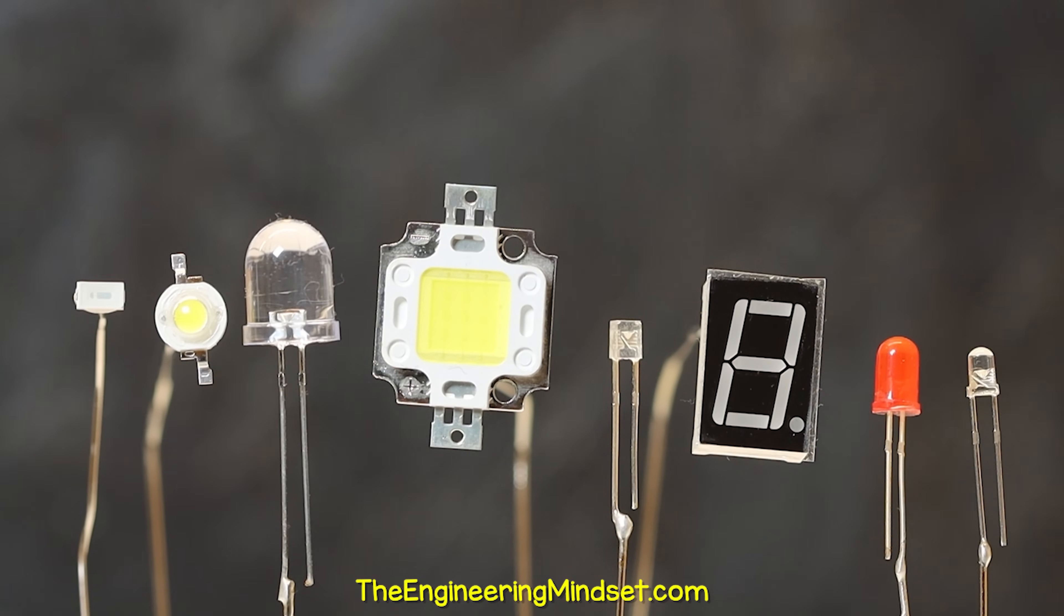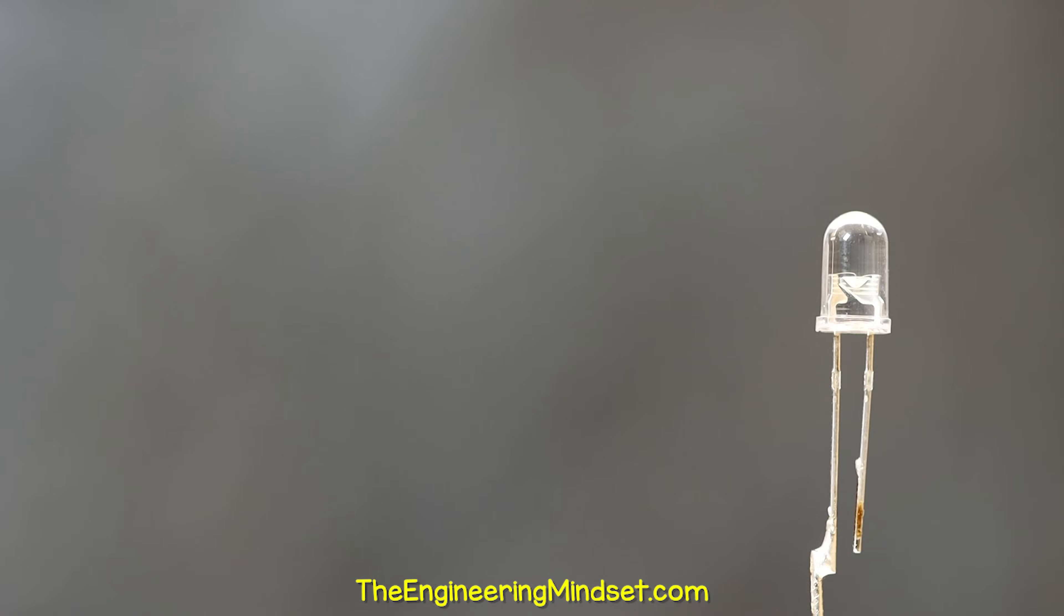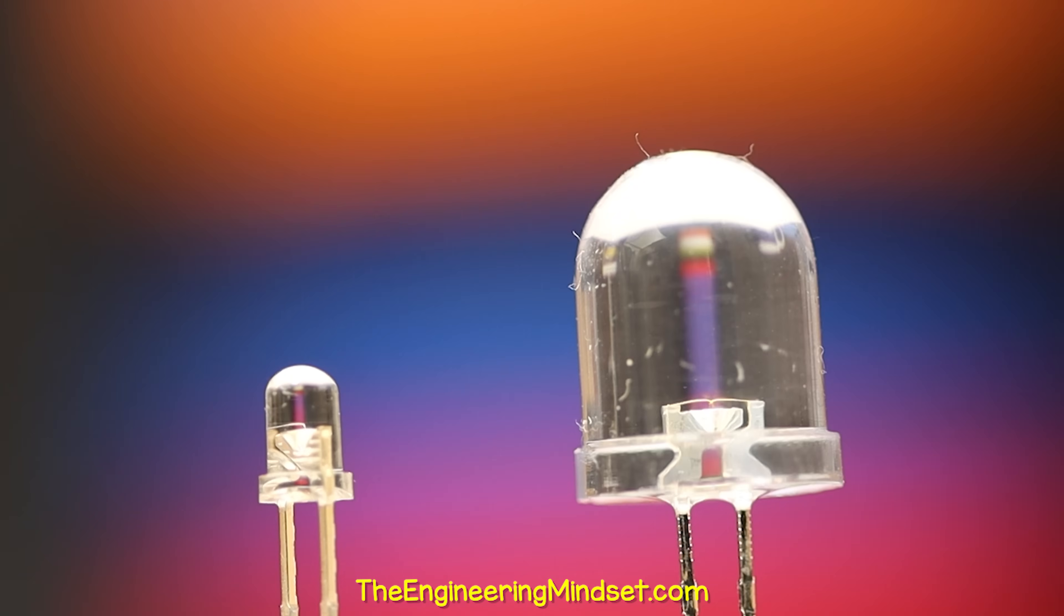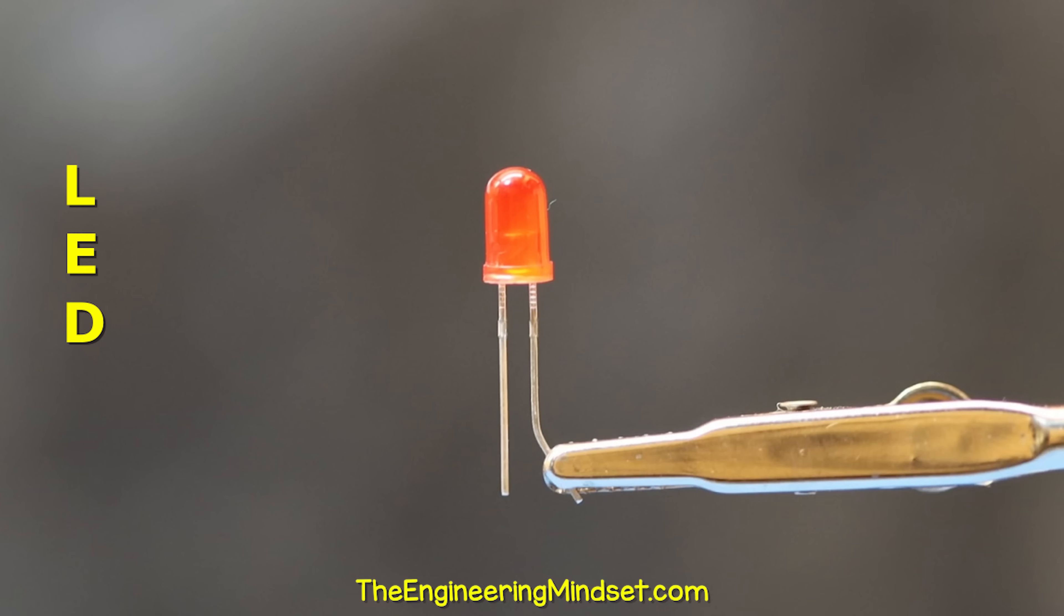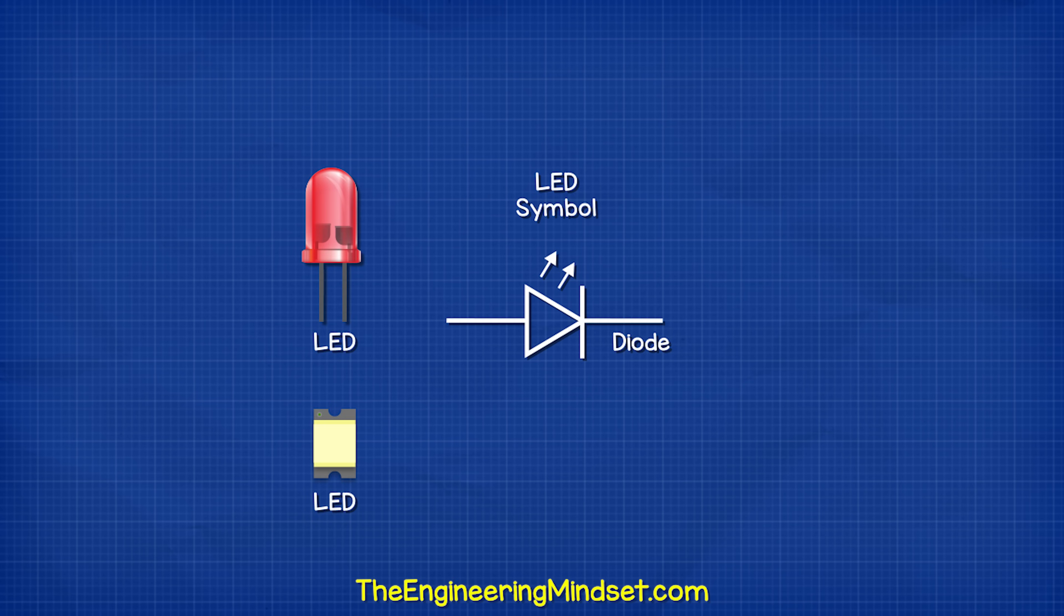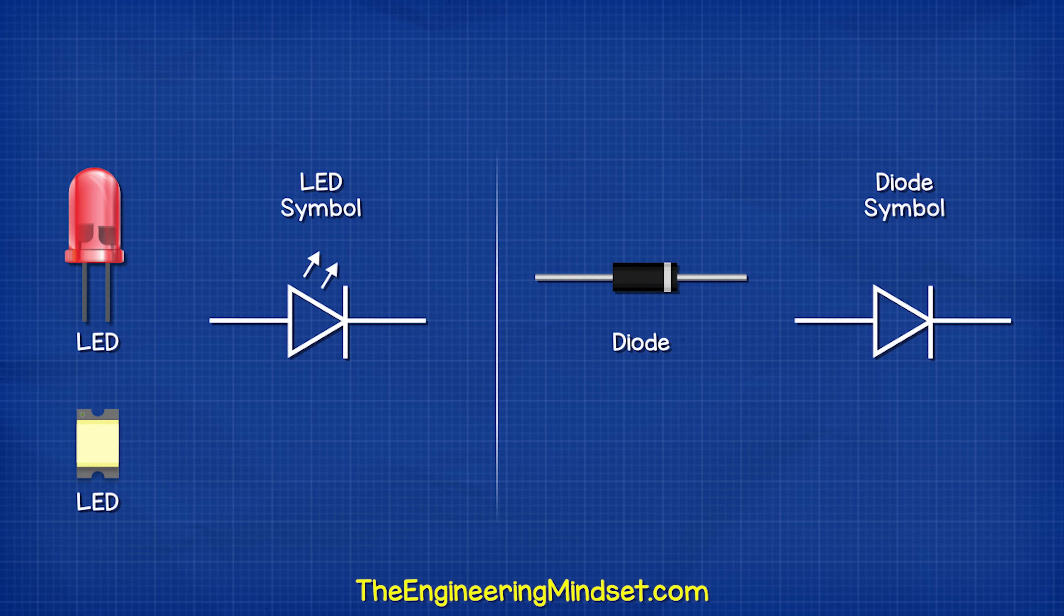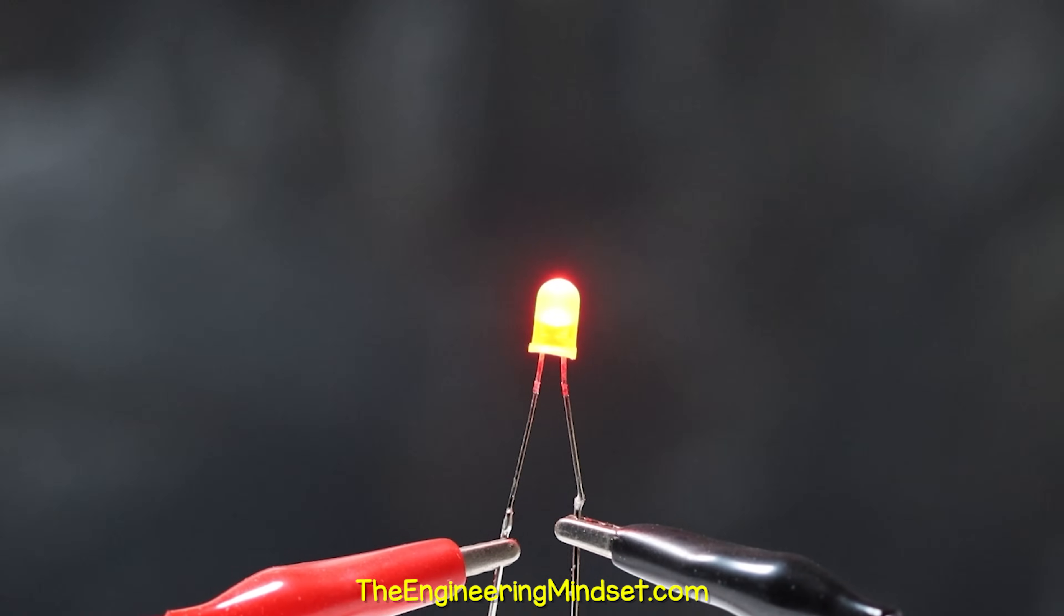LEDs look something like this. They come in different shapes, colors, and sizes for different applications. LED stands for Light Emitting Diode. We use this symbol in engineering drawings for LEDs. Notice it looks very similar to a diode symbol, except it has these arrows that indicate that light is being emitted.